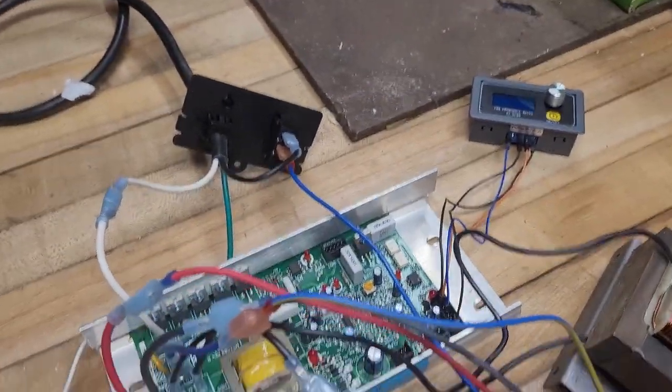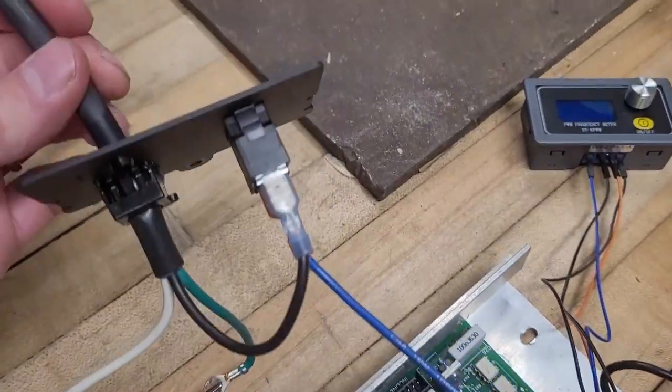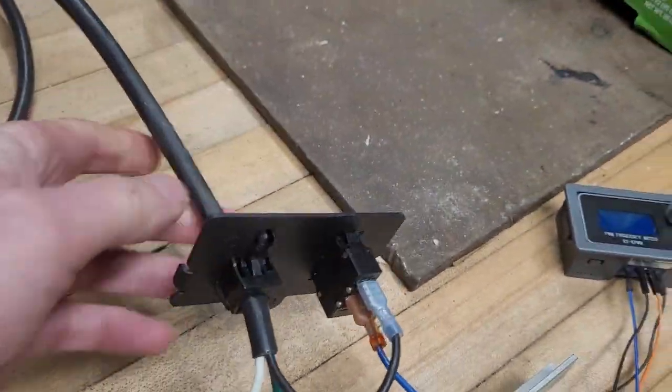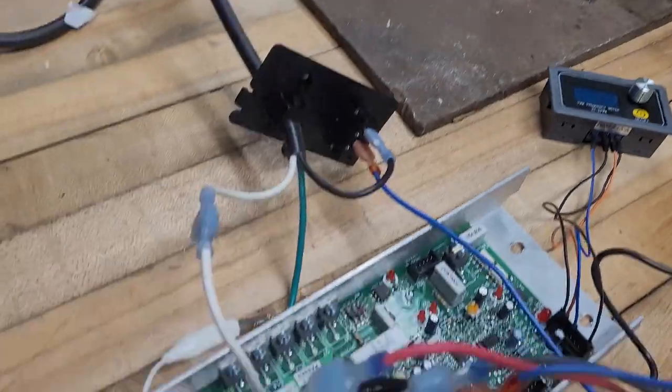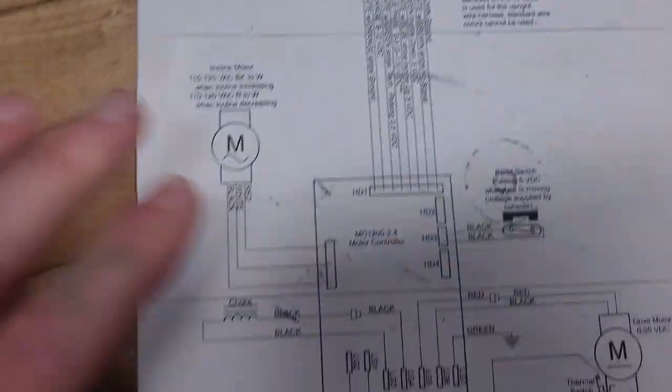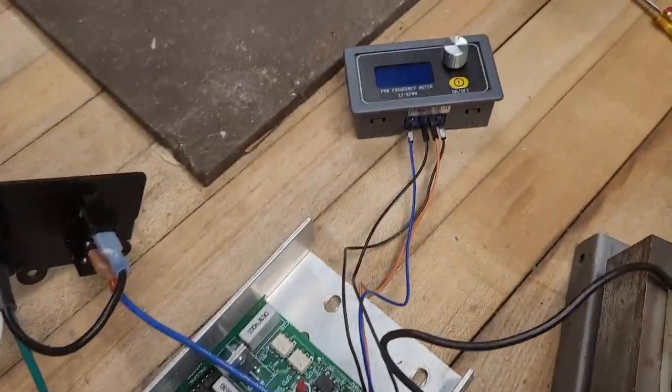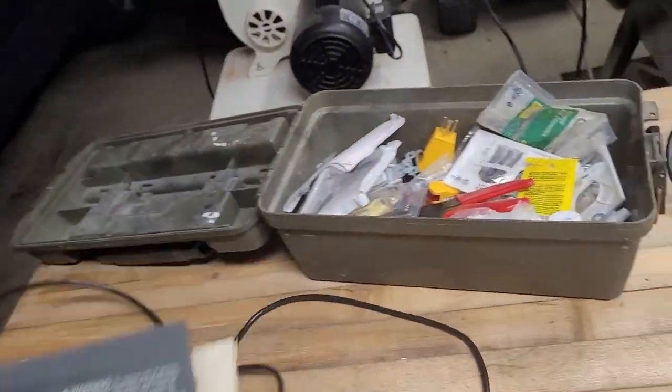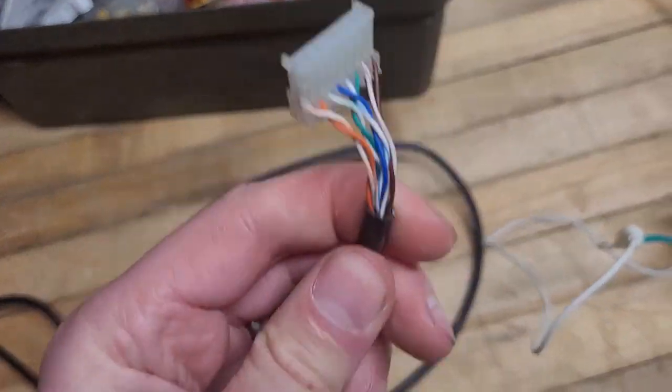With all that hooked up, this is just the regular power and these are all the regular connections for the treadmill. All standard. The only difference is pulling the head unit off. Here's the old plug.